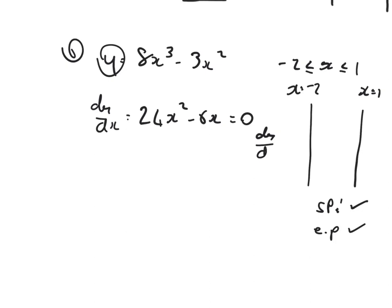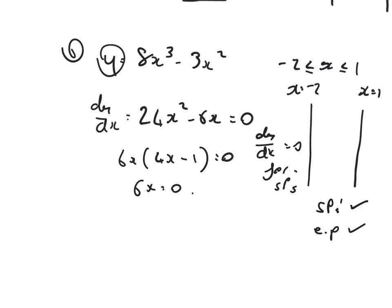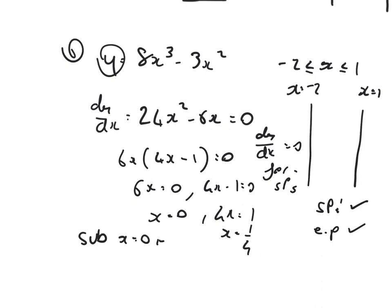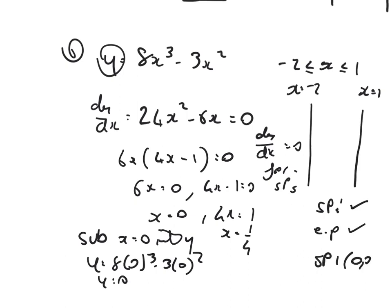Setting dy/dx equal to 0: 24x squared minus 6x equals 0. Taking out a common factor: 6x(4x minus 1) equals 0. So 6x equals 0 and 4x minus 1 equals 0, giving x equals 0 and x equals 1 quarter. Finding the y-coordinate: substituting x equals 0 into y gives y equals 8(0)³ minus 3(0)², which is 0. So stationary point 1 is (0, 0).